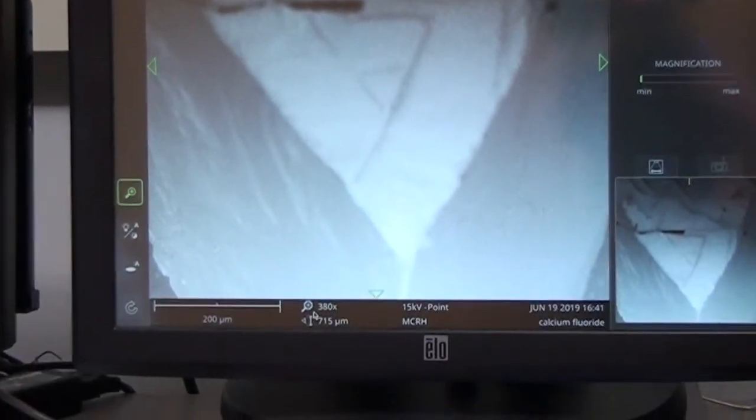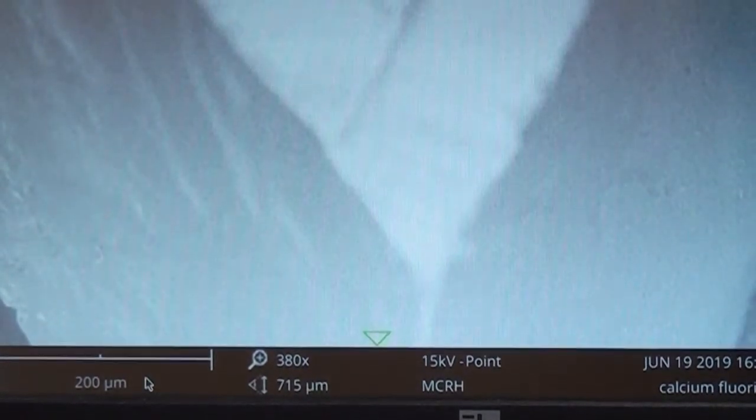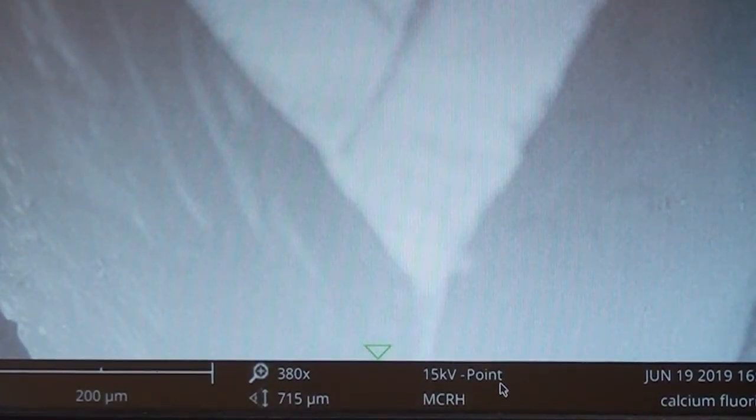Phenom uses the backscattered electrons to generate the image. At the bottom you see the scale bar and then 15 kilovolts of energy and point mode. These two windows have the optical image and the SEM image for each point that we are looking at.